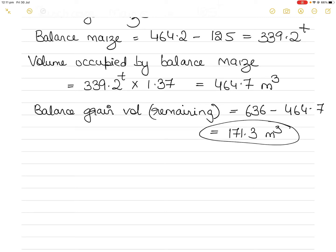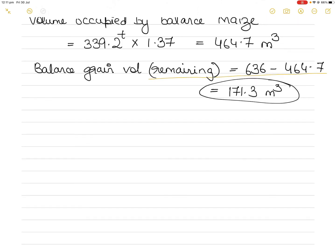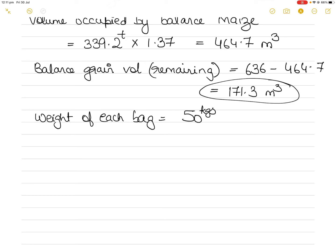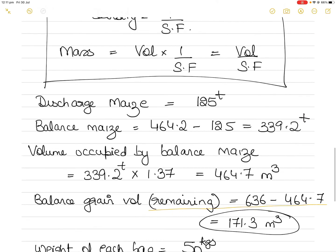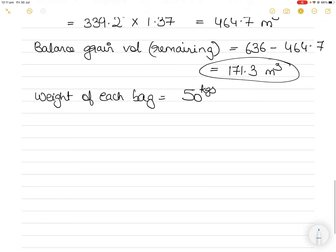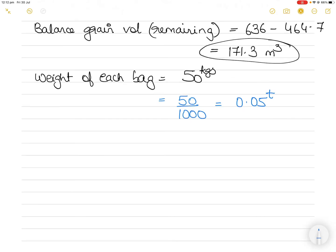Now we need to find how many bags we can load. The weight of each bag is 50 kilograms, which we convert to tons by dividing by 1000, giving 0.05 tons. The volume of each bag is 0.5 × 0.4 × 0.3 meters, which equals 0.06 cubic meters.